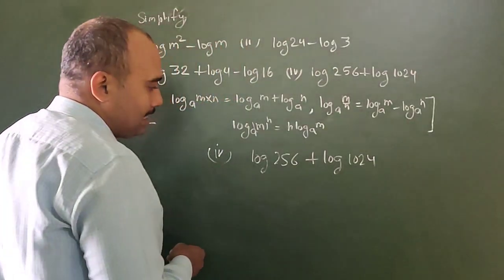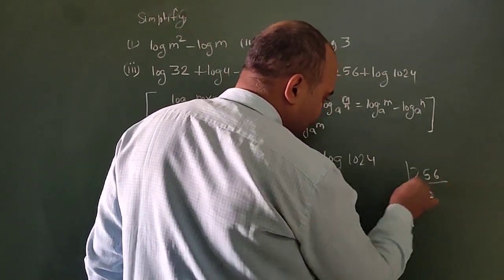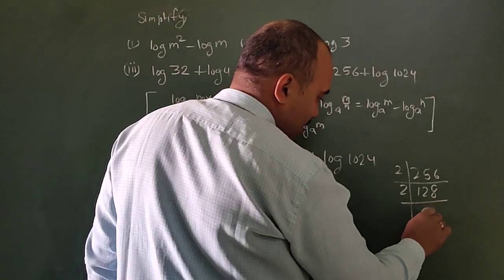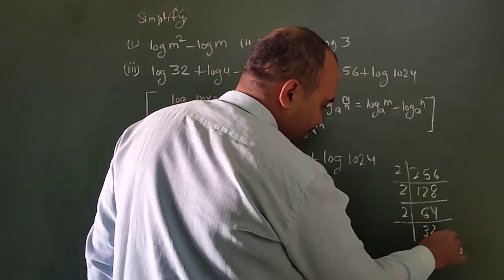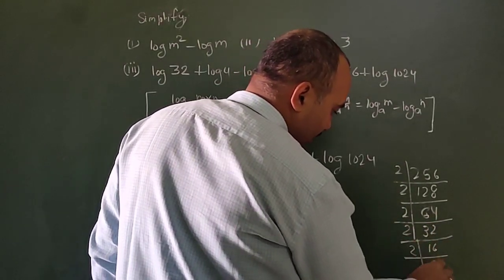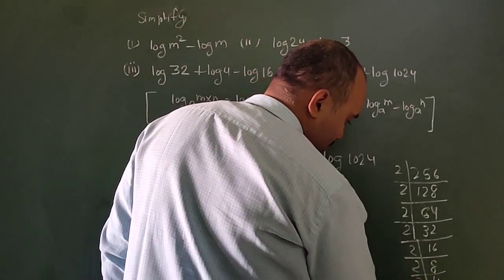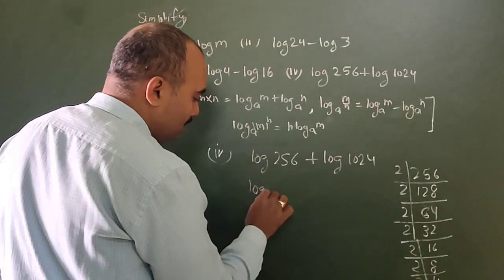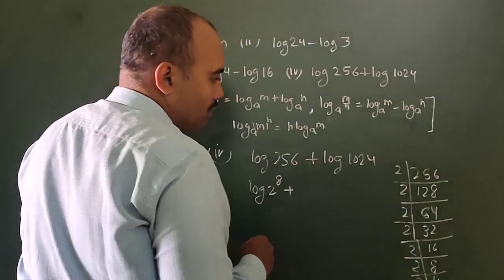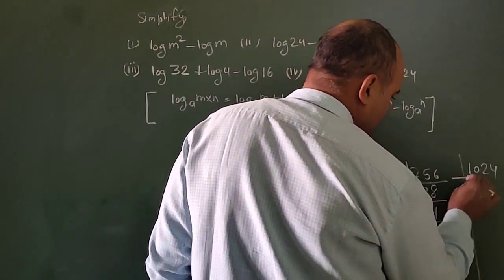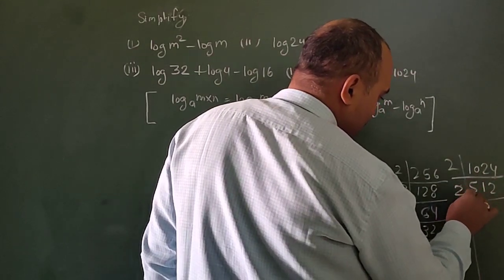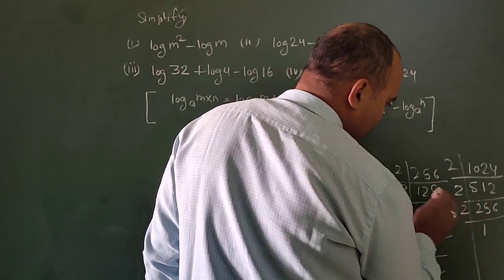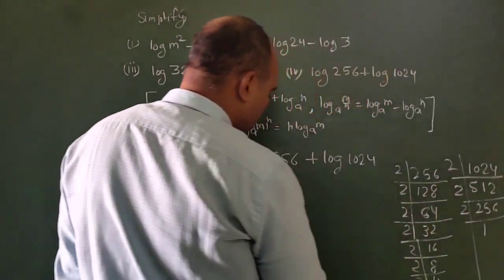256 factorize: 2, 4, 8, 16, 32, 64, 128, 256. Count them: 1, 2, 3, 4, 5, 6, 7, 8. So 2 to the power 8. Log 2 to the power 8 plus... we need to do 1024 also.